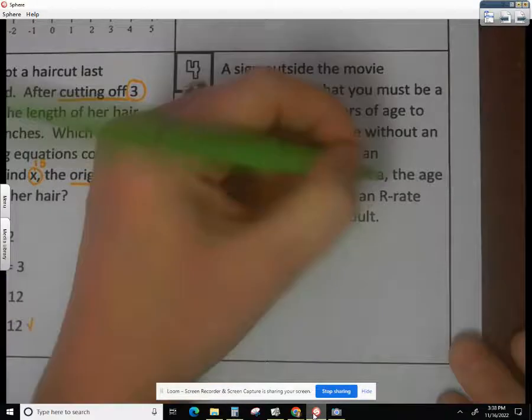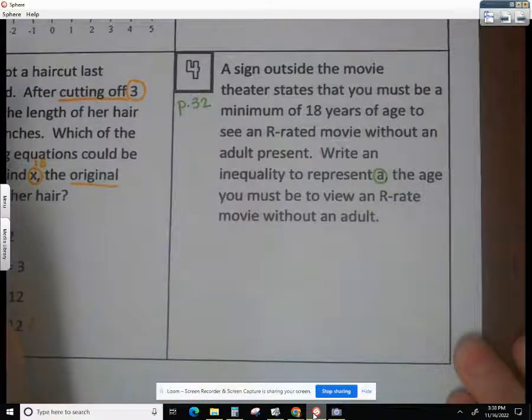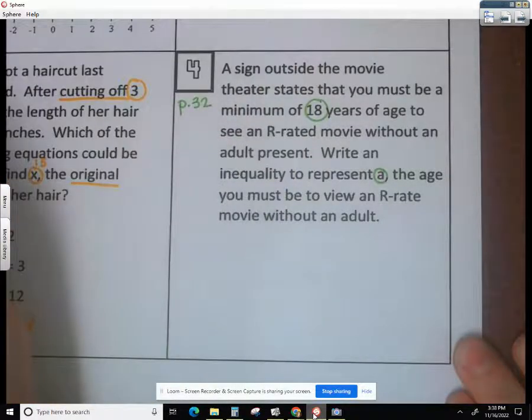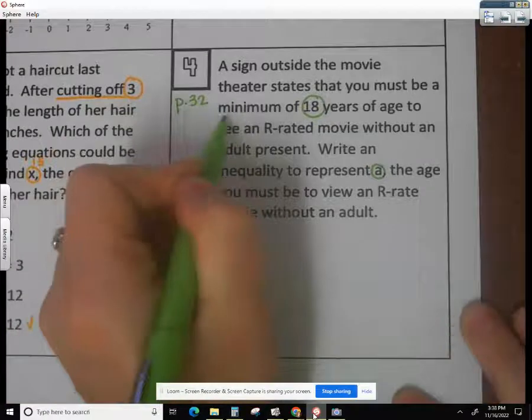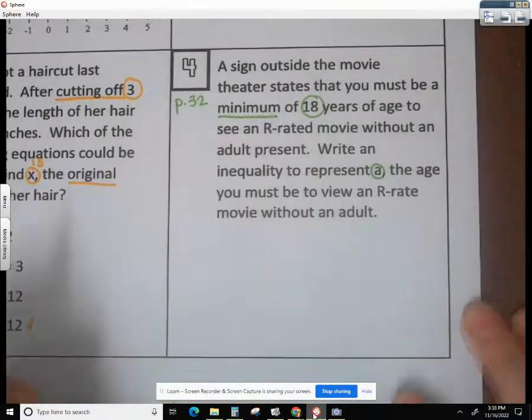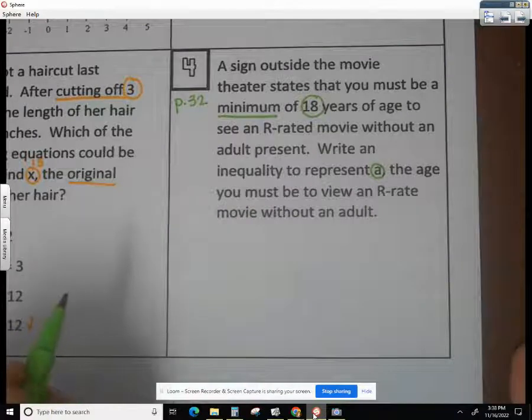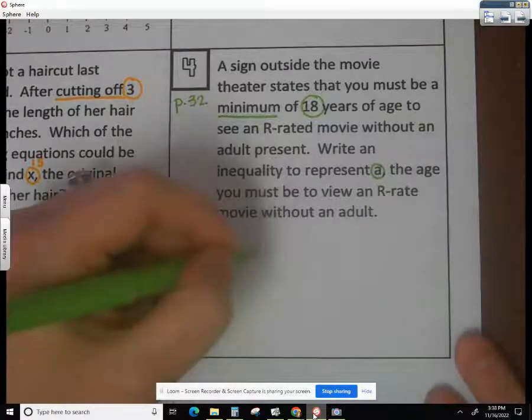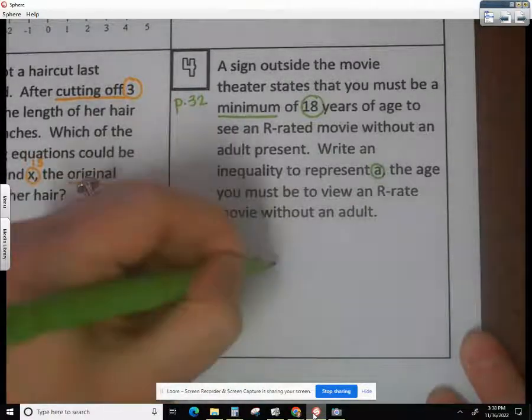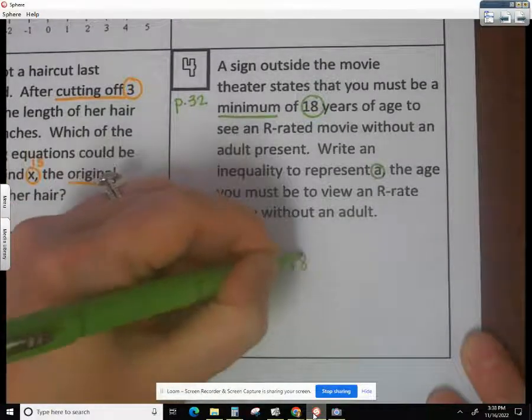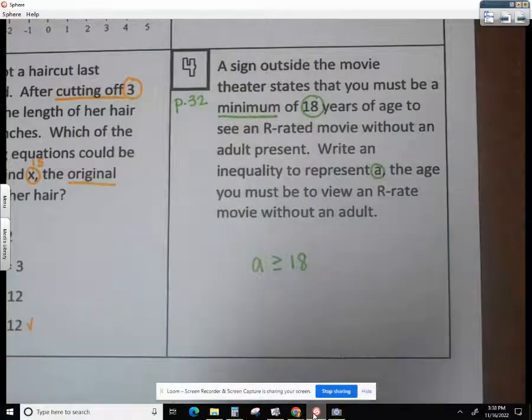So I told y'all that you want to circle your variable, because you're going to be using that. You want to circle your number, because you're going to be using that. And then you want to underline your inequality language. So in this case, it's minimum, minimum of 18. So that means you could be exactly 18, or you could be older than 18, but you cannot be any younger. So we would want to use the greater than or equal to symbol. Your age could be greater than or equal to 18.